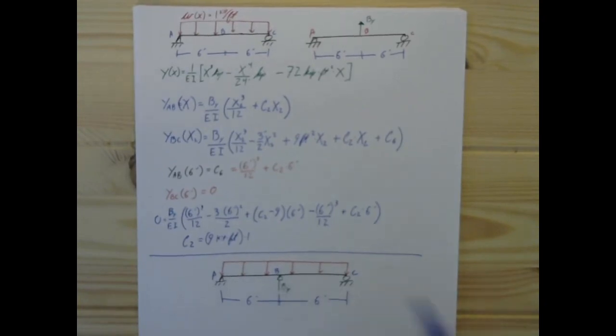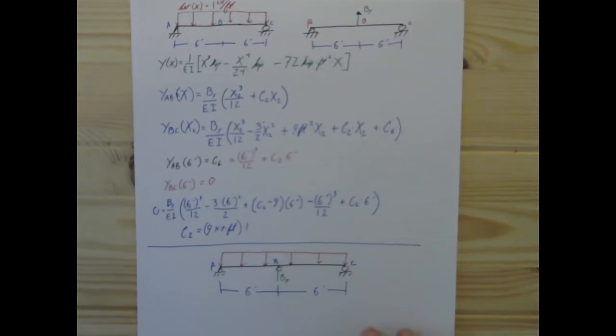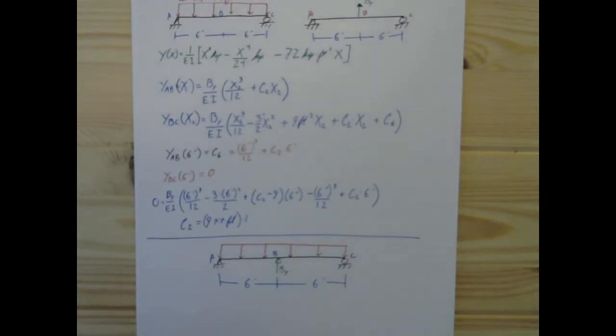And what we want with this is we want to have the deflection at b be 0, because that will fulfill the boundary condition provided by the roller, which we removed from here at the very beginning, but it's there. This is an indeterminate problem, remember, from the beginning.